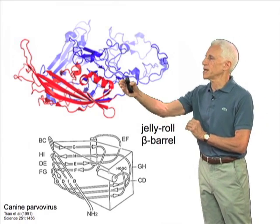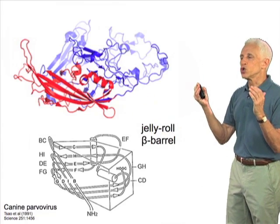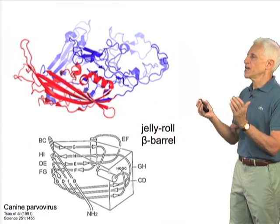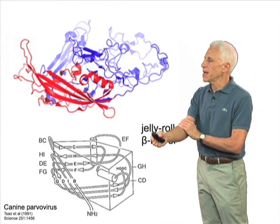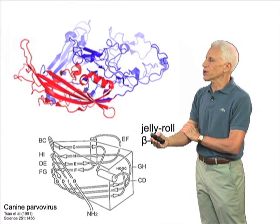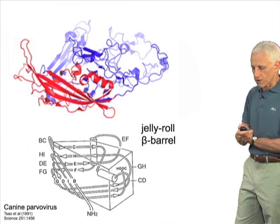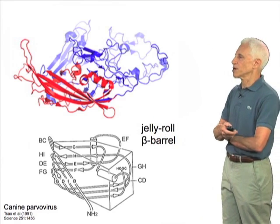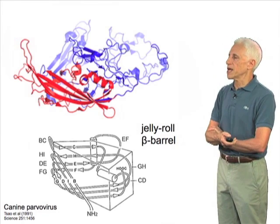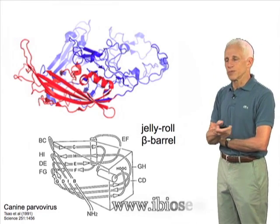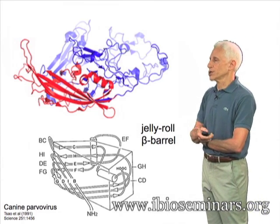That compact domain is represented here in red, with large loops emanating from it. The compact domain has a fold called a jelly roll beta barrel, or sometimes a cupid fold, and this particular representation comes from the structure of canine parvovirus.